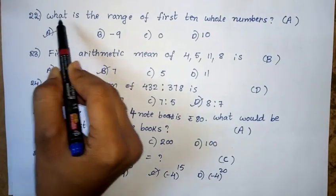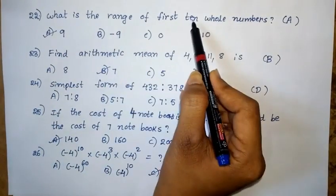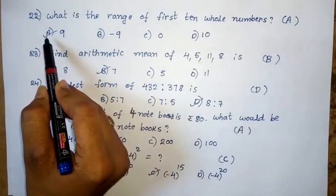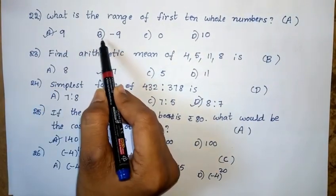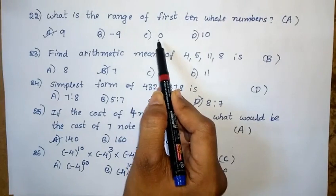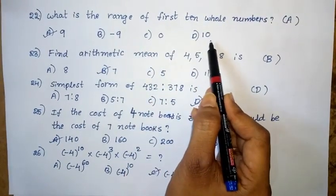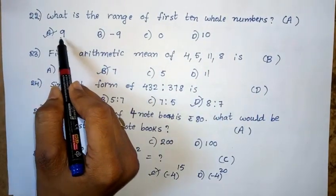Twenty-second question: What is the range of the first 10 whole numbers? Option A: 9. Option B: minus 9. Option C: 0. Option D: 10. The right answer is option A — 9.